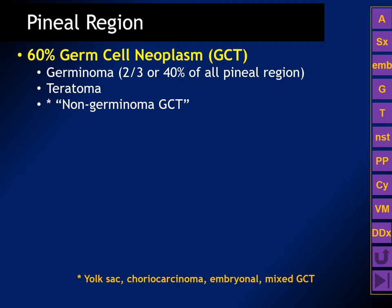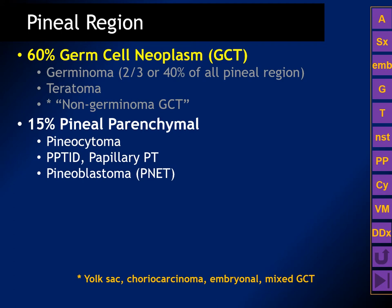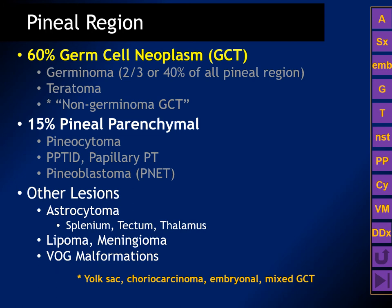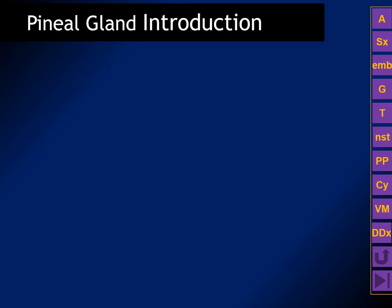Sixty percent of pineal region tumors are germ cell tumors, and of these, two-thirds — or 40% of all pineal region masses — are going to have the germinoma histology. Less than one-seventh of pineal region masses arise from the pineal parenchyma, and there are several subtypes: pineocytoma, which are benign and well-differentiated; pineal parenchymal tumors of intermediate differentiation and papillary pineal tumors; and pineoblastoma, which is a type of primitive neuroectodermal tumor and WHO grade 4.